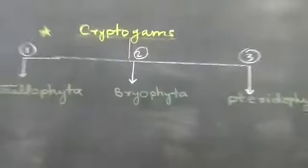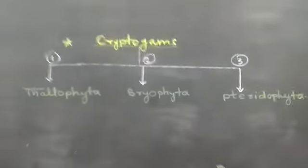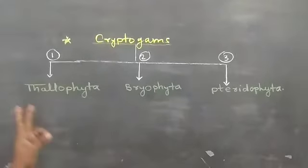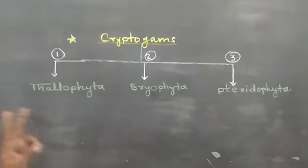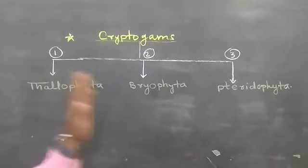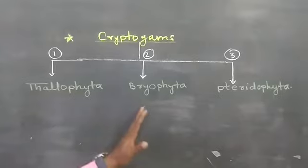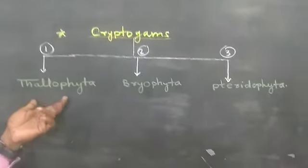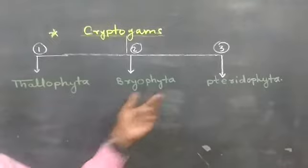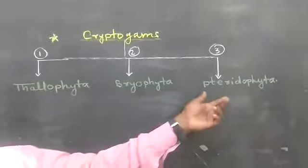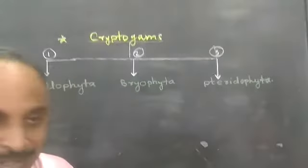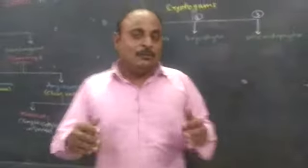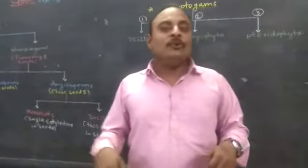Let us understand Cryptogam in detail. Cryptogams is divided into three divisions. The name of the first division is Thallophyta, the second one is Bryophyta, and the third one is Pteridophyta. The 'P' is silent in Pteridophyta. Let us learn it in detail and move towards the textbook.